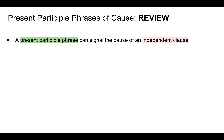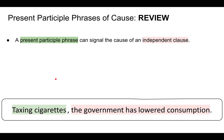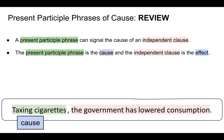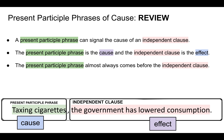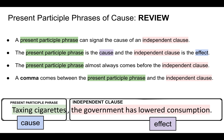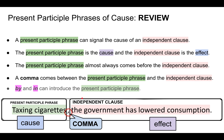Moving forward, let's do a quick review. A present participle phrase can signal the cause of an independent clause. Taxing cigarettes, the government has lowered consumption — the present participle phrase is the cause and the independent clause is the effect. One of our form rules is that the present participle always comes before the independent clause, so the independent clause comes last and the present participle comes first. Another form rule is that a comma comes between the present participle phrase and the independent clause. Lastly, we can use by and in to introduce the present participle phrase and to strengthen that this is the cause of the independent clause — for example: by taxing cigarettes, the government has lowered consumption.